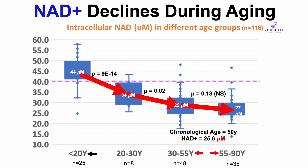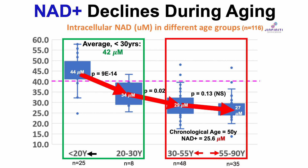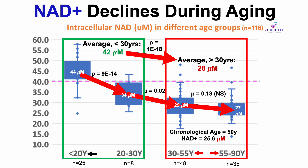To put my data into perspective: at my chronological age of 50 and an NAD level of 25.6 micromolar, that places me in an aged category for intracellular NAD. Comparing subjects younger than 30 — average NAD 42 micromolar — with those older than 30 — average 28 micromolar — a two-sample t-test confirms these are significantly different. People younger than 30 have about 33% higher intracellular NAD than those older than 30.